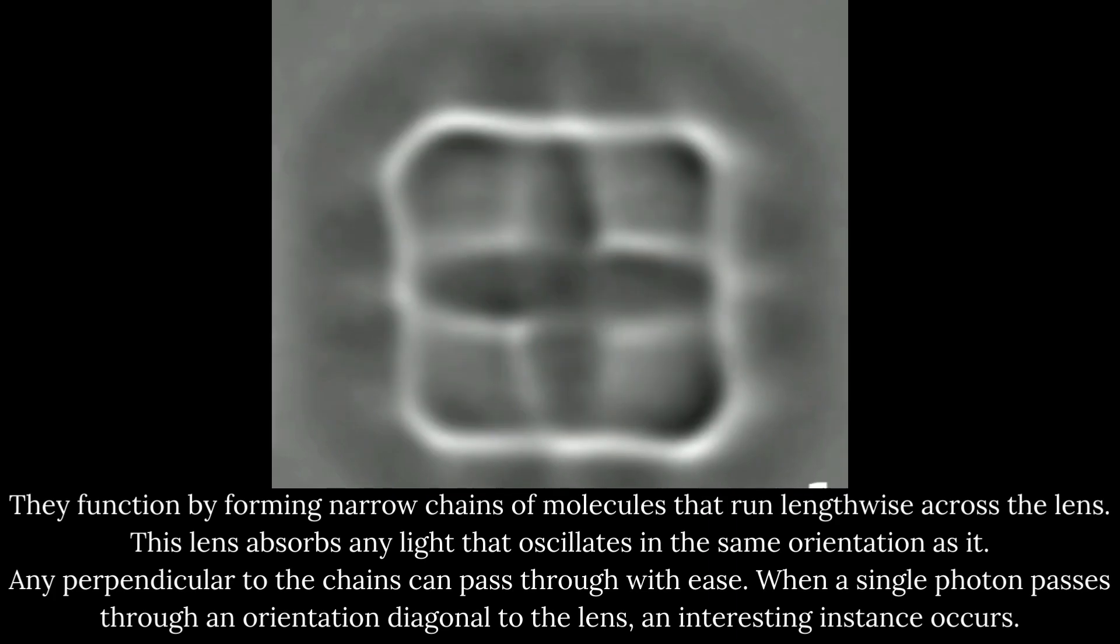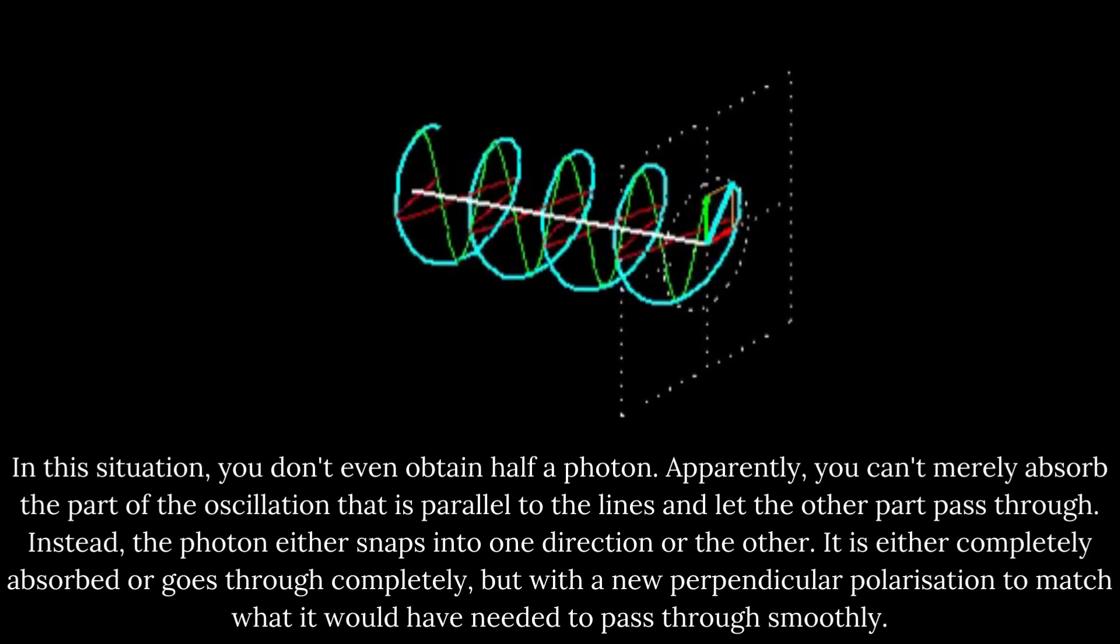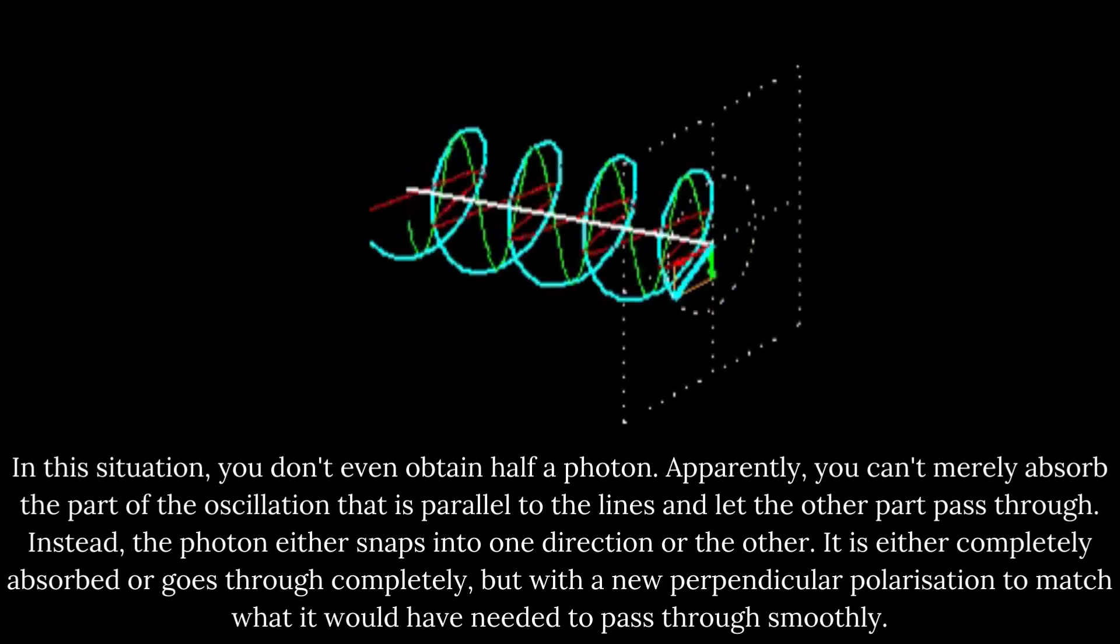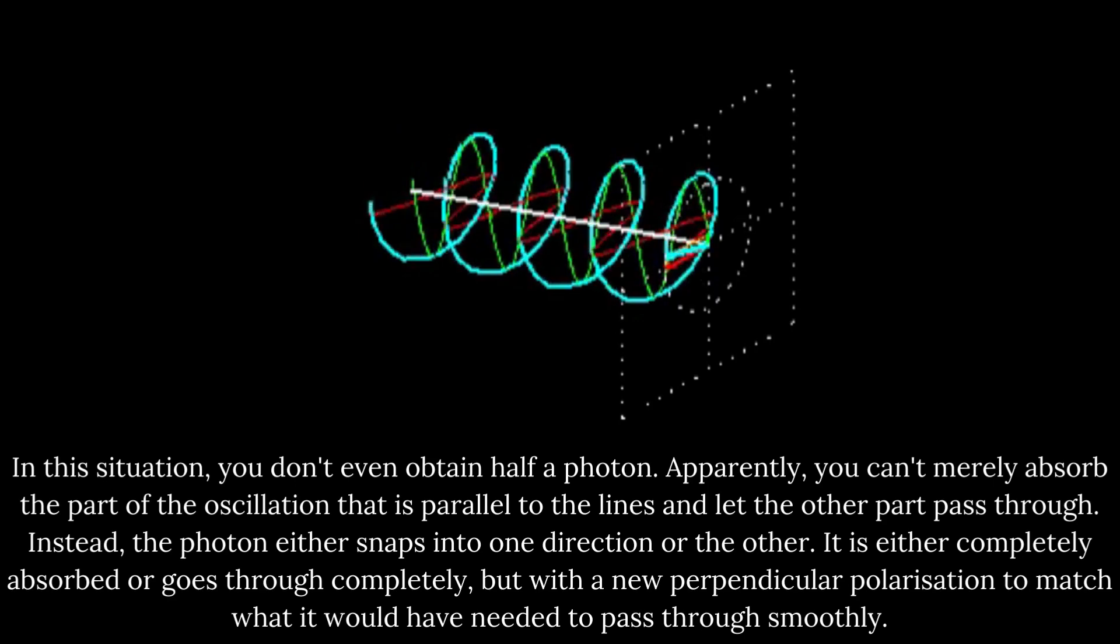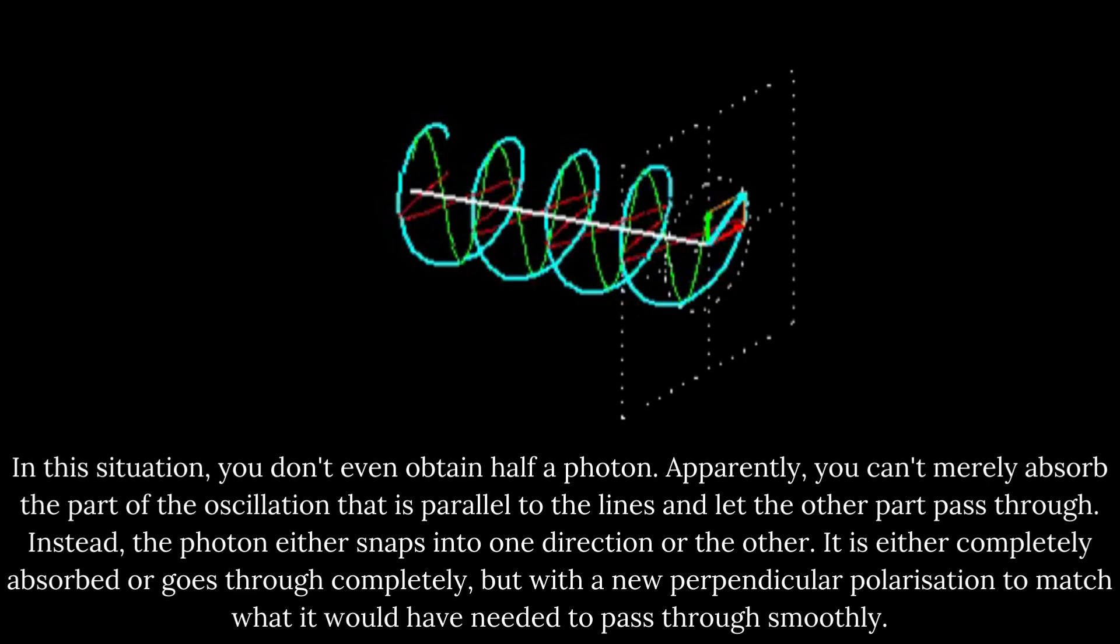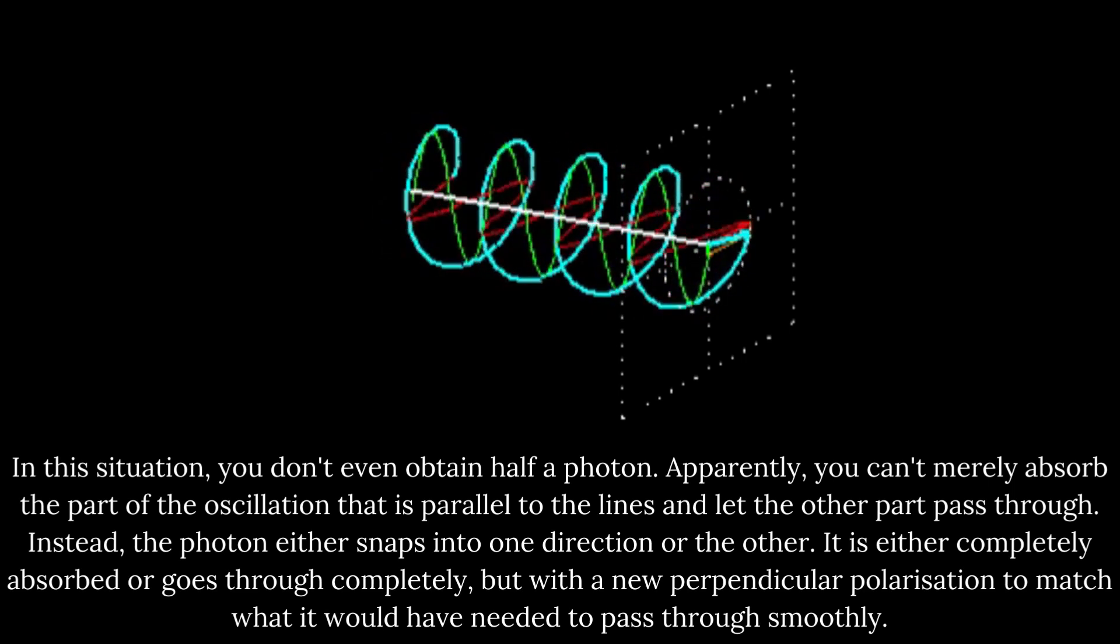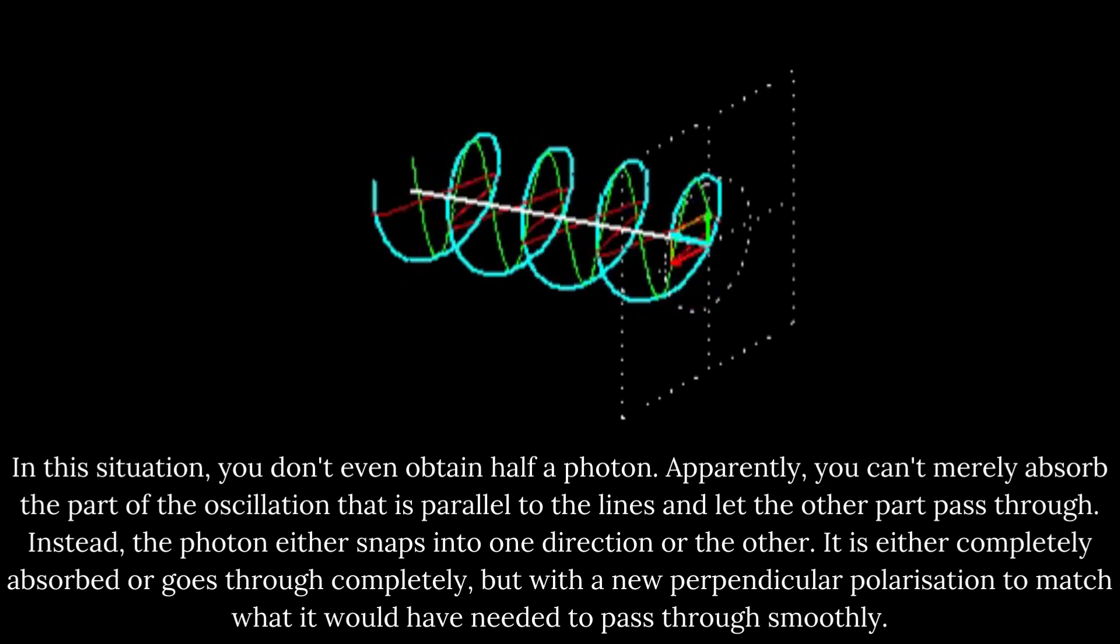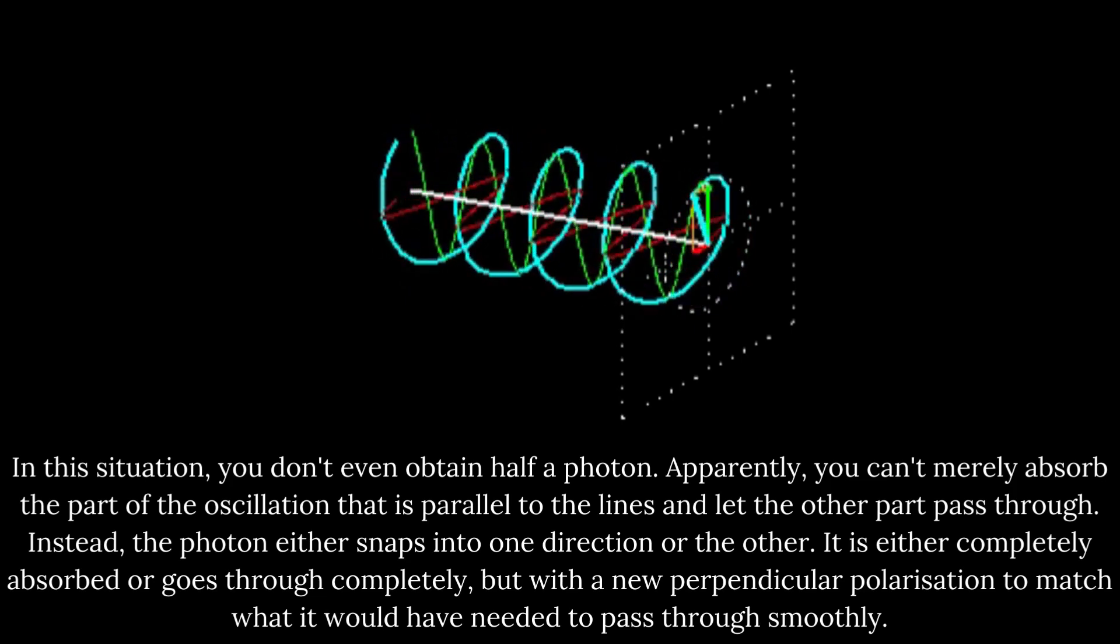When a single photon passes through an orientation diagonal to the lens, an interesting instance occurs. In this situation, you don't even obtain half a photon. Apparently, you can't merely absorb the part of the oscillation that is parallel to the lines and let the other part pass through. Instead, the photon either snaps into one direction or the other. It is either completely absorbed or goes through completely, but with a new perpendicular polarization to match what it would have needed to pass through smoothly.